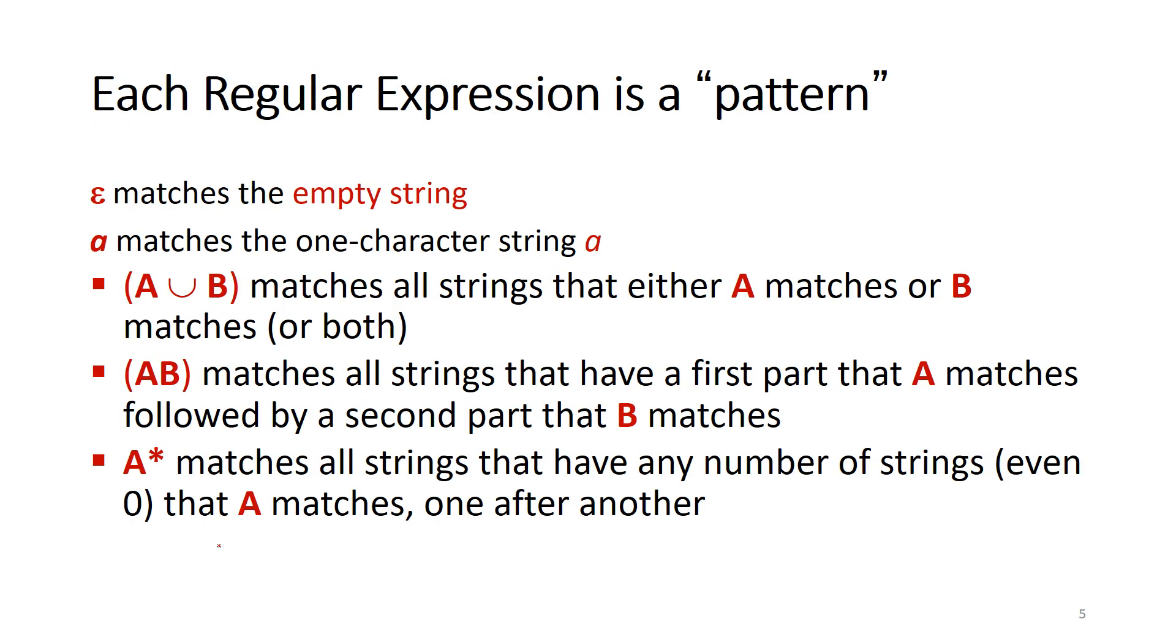Epsilon matches the empty string. The character matches the one character string A. A union B matches all strings that either A matches or B matches. AB matches all strings that have a first part that A matches, followed by a second part that B matches.